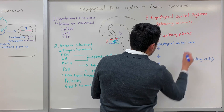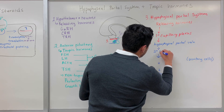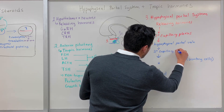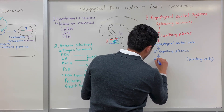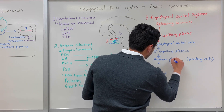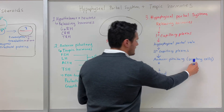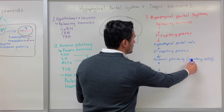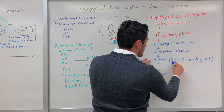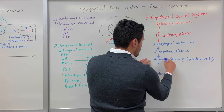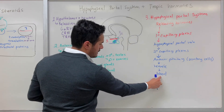From the hypophyseal portal vein, they get into the secondary capillary plexus, and from there they reach the anterior pituitary, which contains secretory cells. The releasing hormones reach their target secretory cells in the anterior pituitary, and then the tropic hormones travel through the venule into the blood.